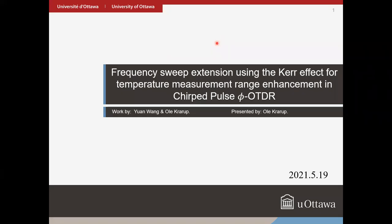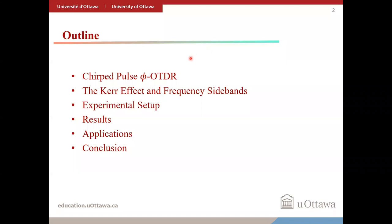This presentation will explain how the Kerr effect can be used to extend the frequency-sweeping range of a chirped optical pulse and how this can be used to enhance the sensing range of chirped pulse φOTDR. The presentation will explain the theory behind chirped pulse φOTDR, the Kerr effect and how it can be exploited to create frequency sidebands, the experimental setup used to combine these two methods, and the experimental results. Applications to other systems relying on chirped optical signals will also be discussed.